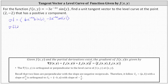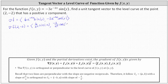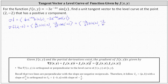Now we evaluate the gradient vector function at the given point. When x is two, we have six e to the negative four, which is six divided by e to the fourth, times sine negative two. The y component is negative three divided by e to the fourth times cosine negative two. Because the sine function is odd, sine negative two equals negative sine two, so the x component becomes negative six divided by e to the fourth sine two. And because the cosine function is even, cosine negative two equals cosine positive two, so the y component is negative three divided by e to the fourth cosine two.